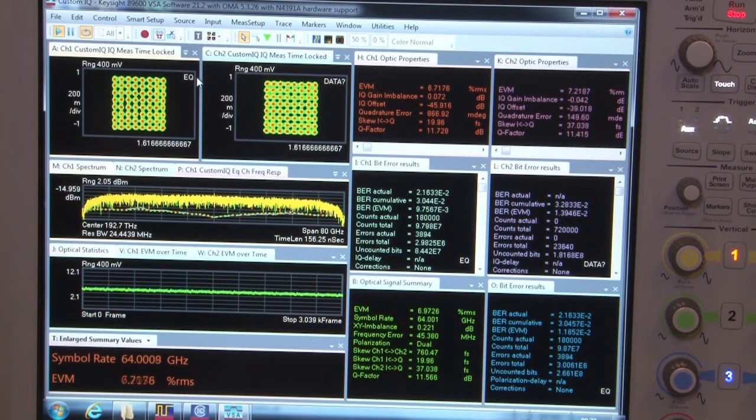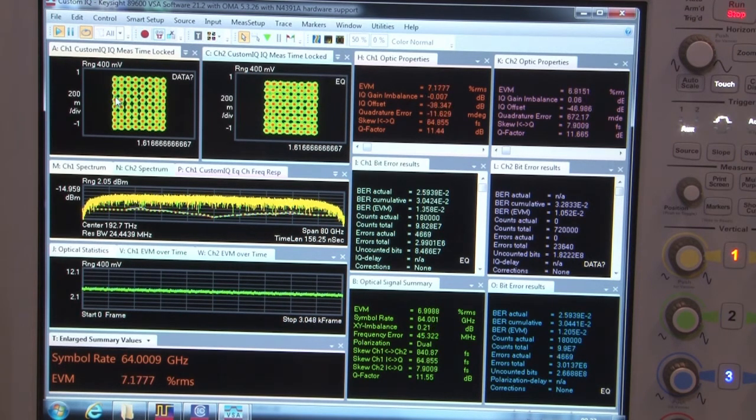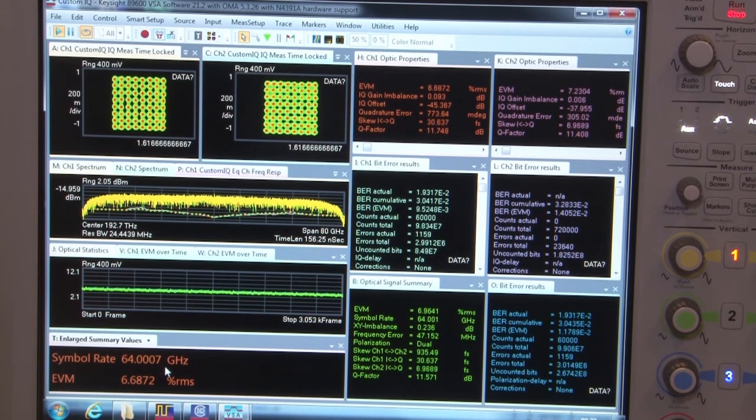Here we look at the graphical user interface of our optical modulation analyzer. We currently look at the QAM64 signal running at 64 gigahertz symbol rate. It's a dual polarization signal.